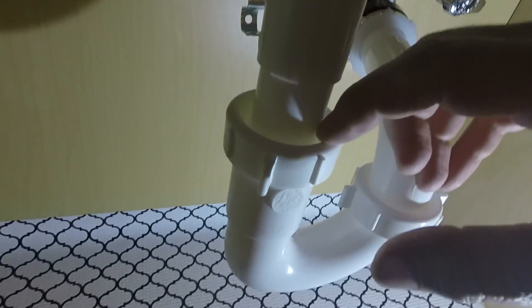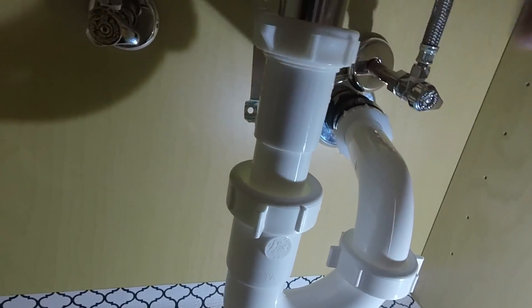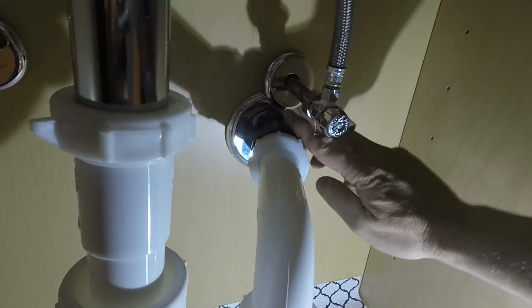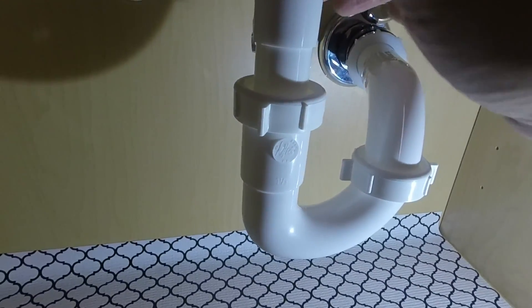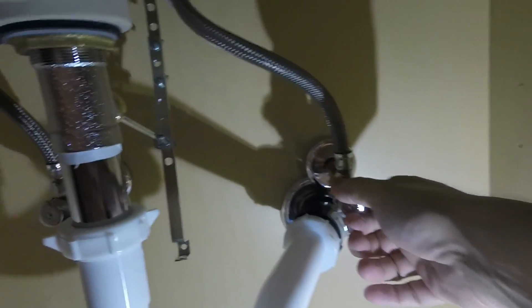So you have your reducing washer in here. This is your extension. This is your tailpiece. This is your P-trap and then it goes into your waste drain. And so all these connections are tight. And then after that you can go ahead and turn on your water.